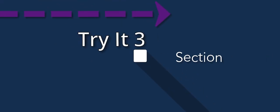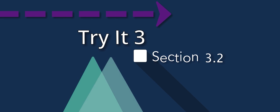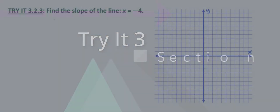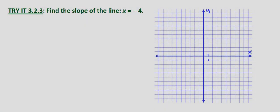Now we've been looking at slopes of horizontal and vertical lines. We're asked to find the slope of the line x equals negative 4.